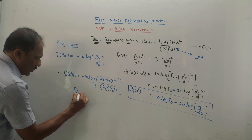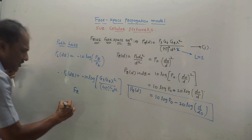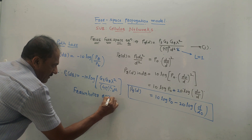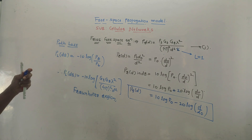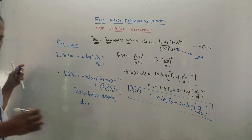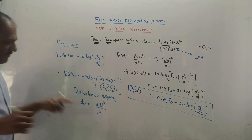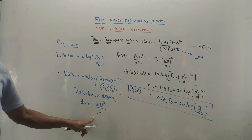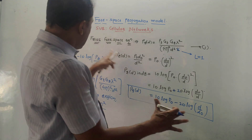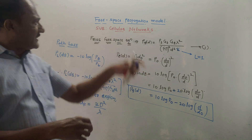One more equation needed for solving numericals is the Fraunhofer region. The Fraunhofer region is given by DF. It is the range given as DF = 2D²/λ, where lambda is the wavelength and capital D is the largest physical dimension of the antenna. This is the free space propagation model, and we will now solve a few numericals to get insights of this model.